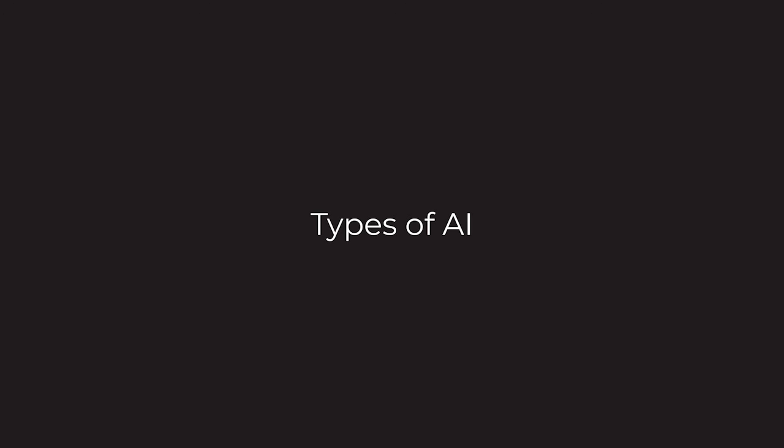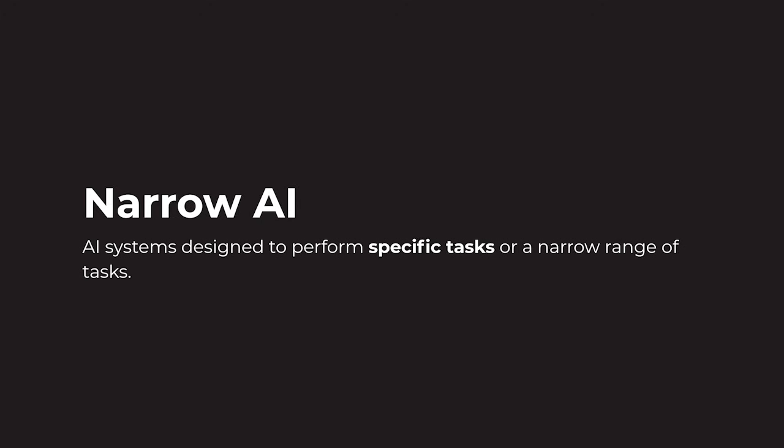There are types of AI. The first type is Narrow AI. This is the base level AI — it can do one specific task. For example, Google Translate, chatbots, or similar single-task tools. We are mostly using Narrow AI today.